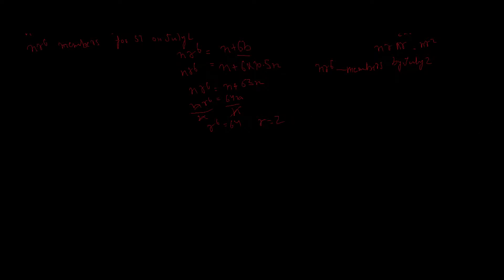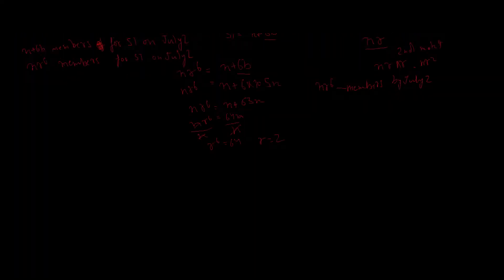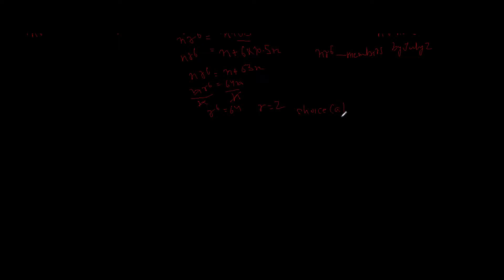Hence we will select choice A. As you saw, once again I made no attempt to directly form an equation. I just listed down the unknowns, read the conditions, and established relations between them. My equation ultimately formed on its own — R⁶ = 64 — which led me to R = 2.